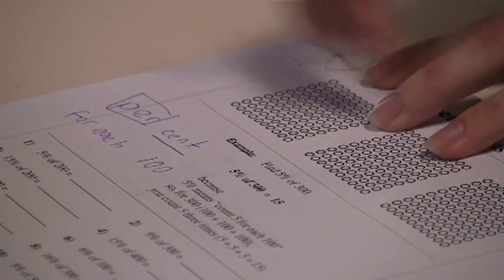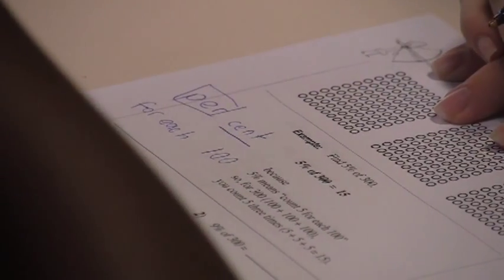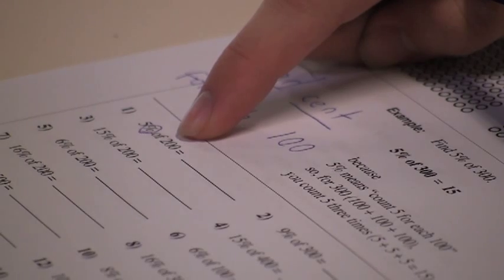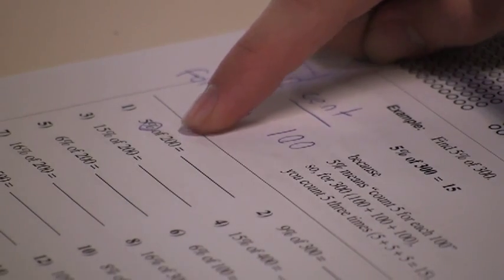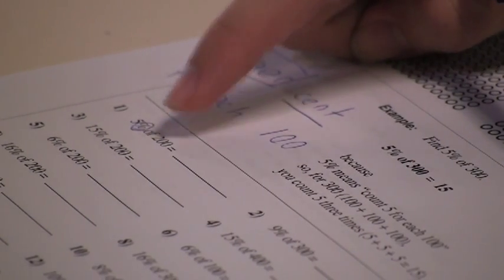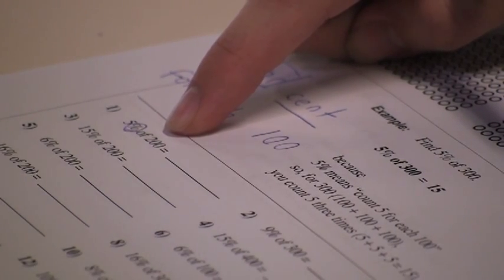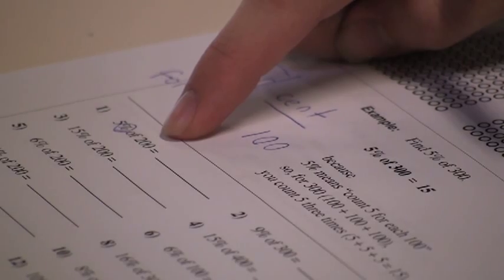So, if we're going to look at these percent problems, this sign means percent. So, we're saying five percent of two hundred. Well, how many one hundreds are in the number two hundred? Two. So, if we have five for each one of those hundreds, how much would that be? Ten. Very good. So, five percent of two hundred is ten. Put your answer right there.